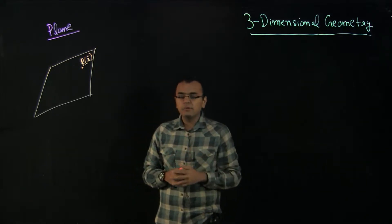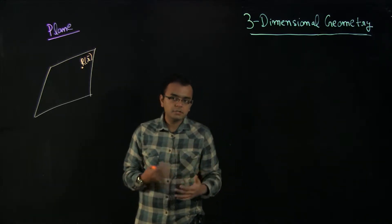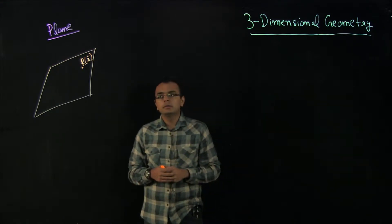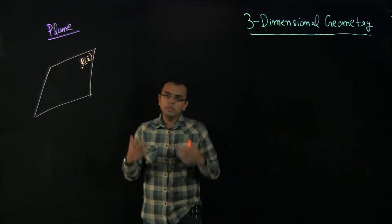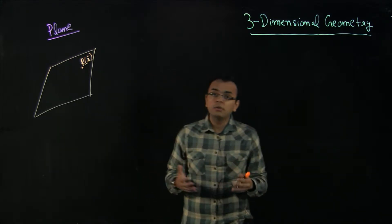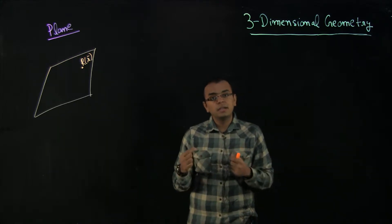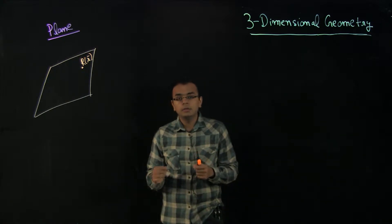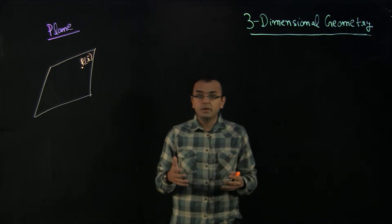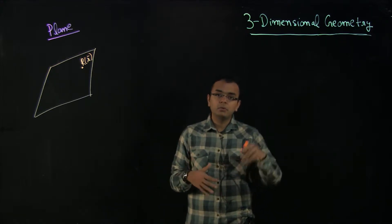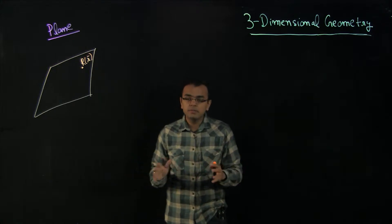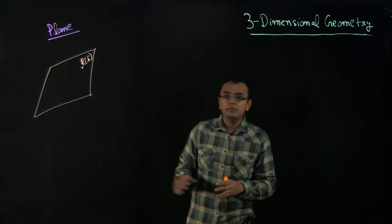So let us first define the equation of a plane, see some features about the plane, and then we will take some problems on it. So what do we need to define a plane? In the topic of straight lines we discussed what we need to define a straight line. In a straight line we needed a point, which was A vector, and a parallel vector, which was B vector, and we wrote r vector = A vector + λ B vector. If you are not familiar with this, please go ahead and check out the straight lines video.